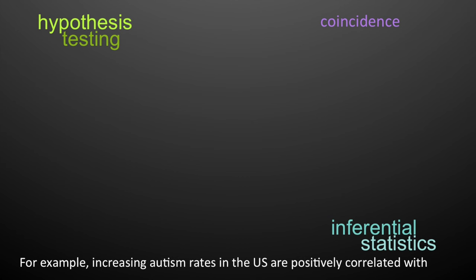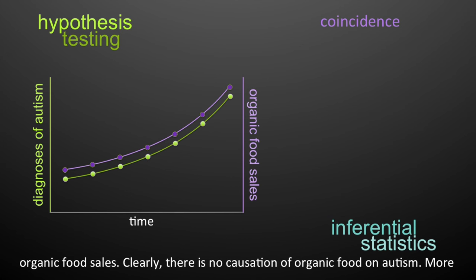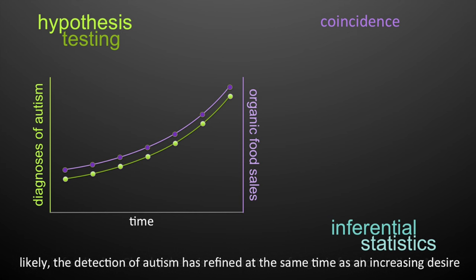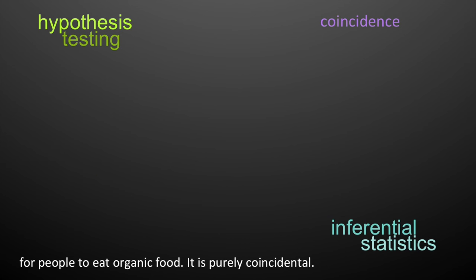For example, increasing autism rates in the United States are positively correlated with organic food sales. Clearly, there is no causation of organic food on autism. More likely, the detection of autism has refined at the same time as an increasing desire for people to eat organic food. It's purely coincidental.